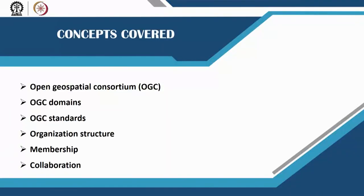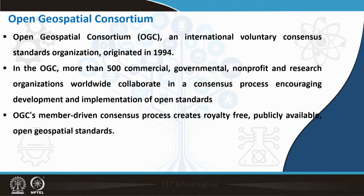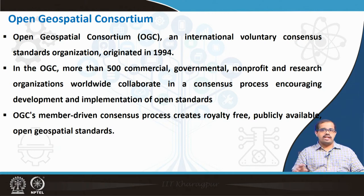We will look at how OGC evolved as an organization, what are its domains and standards, the structure of that organization, how one can become a member, and how collaboration around standardization can happen through OGC. Whenever we say Open Geospatial Consortium, it is an international voluntary consensus standard organization established in 1994.